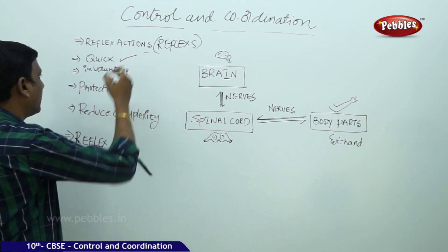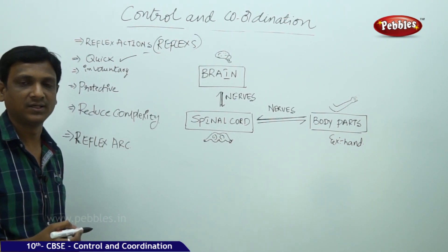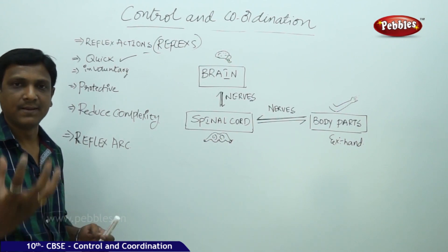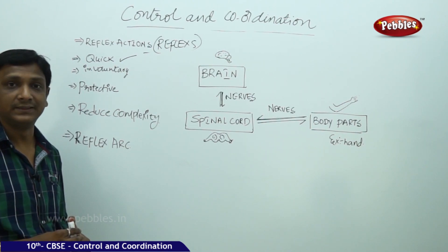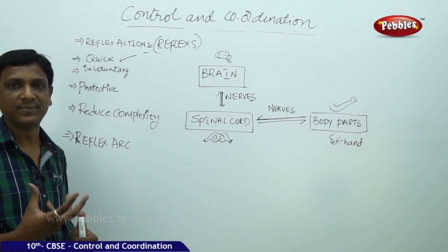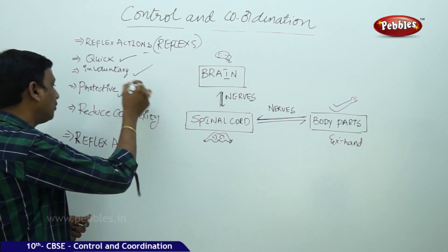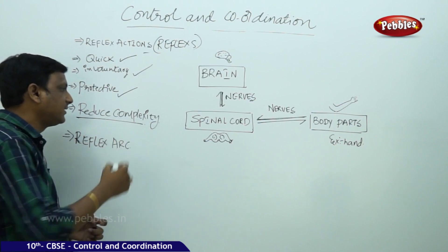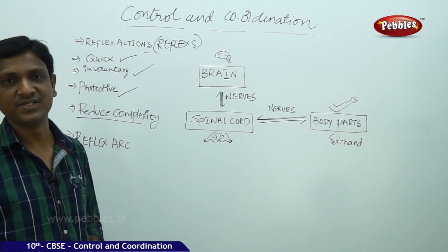The characteristics of a reflex are that they are very quick and involuntary — sometimes not under our control. When a fly approaches your eyes, immediately you close your eyelids — you cannot keep your eyelids open. It all happens involuntarily. So reflexes are quick, involuntary responses, mostly protective in nature. Another important point is that reflexes reduce the complexity of the process of decision-taking.